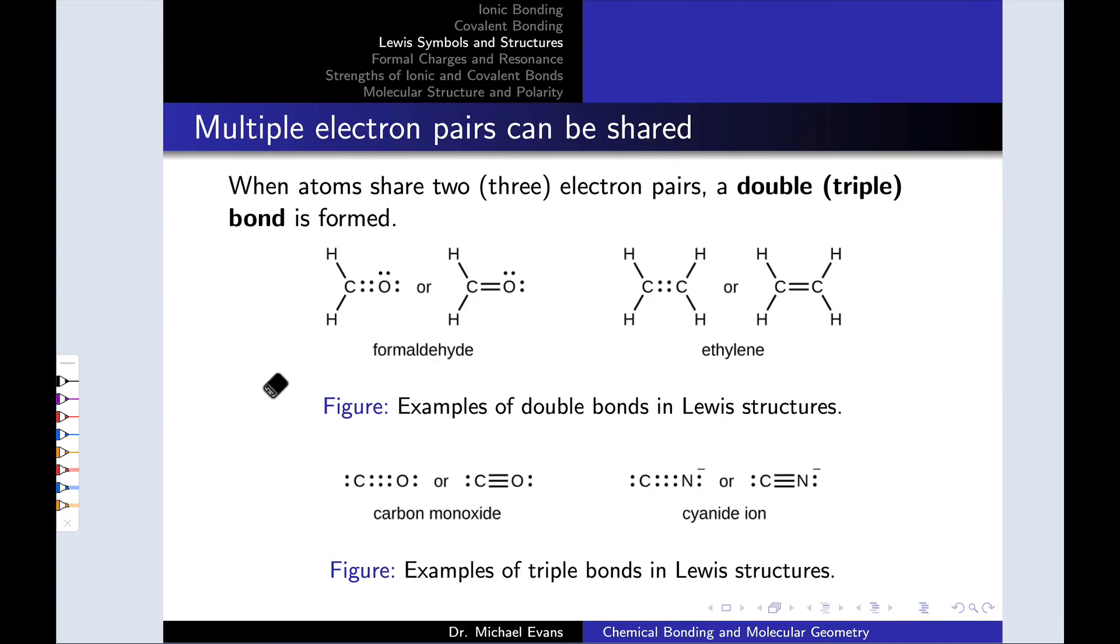So far we've seen examples where one pair of electrons is shared between two atoms to form a single bond, but multiple pairs can be shared. When atoms share two or three electron pairs, a double or triple bond is formed.